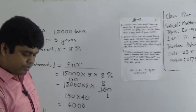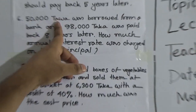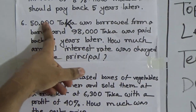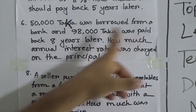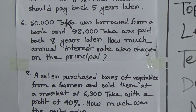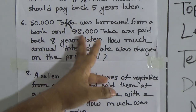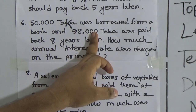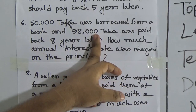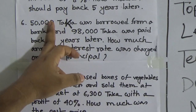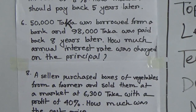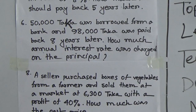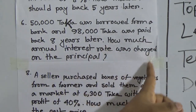Next we shall solve question number 6. Here, 50,000 taka was borrowed from a bank — that means 50,000 taka is the principal. And 98,000 taka was paid back 8 years later. So, the time is 8 years. If we subtract the principal (50,000 taka) from the payable amount (98,000 taka), then we get the simple interest. We then have principal, simple interest, and time — so we can find the annual interest rate.